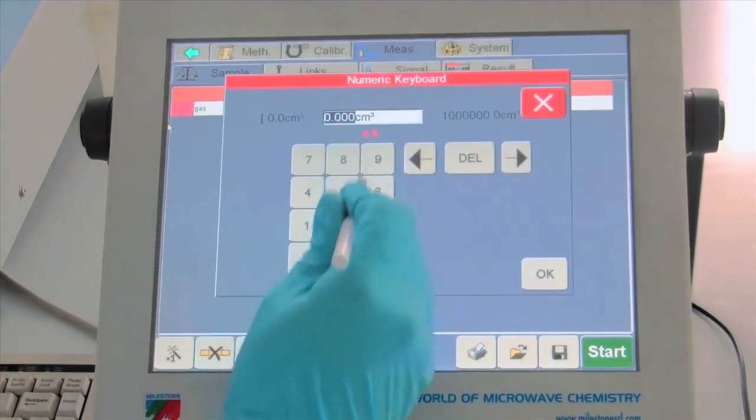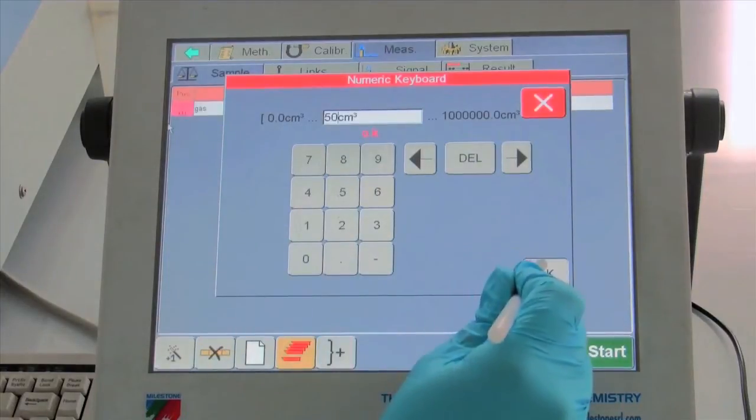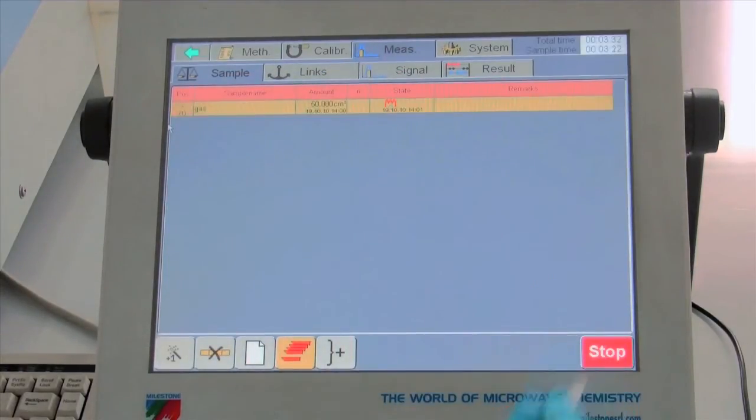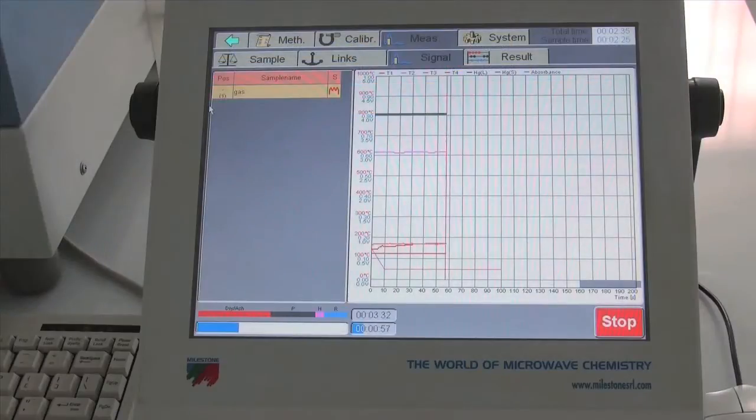EasyControl also has an automated blank check feature. Should an extremely high concentration sample be measured, it will run blank cycles until the blank returns to a user-defined level. A great feature for unattended operation.